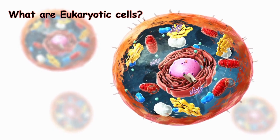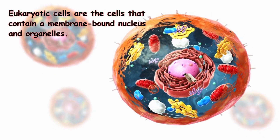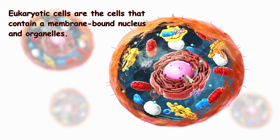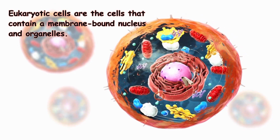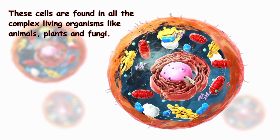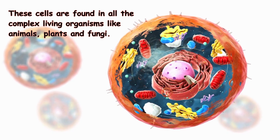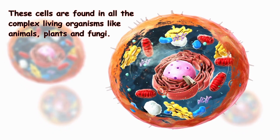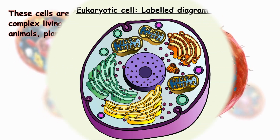Let us first see what are eukaryotic cells. Eukaryotic cells are known as the powerhouse of life. These are the cells that contain a membrane-bound nucleus and organelles. These cells are found in all the complex living organisms like animals, plants and fungi.